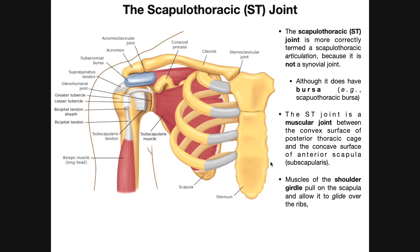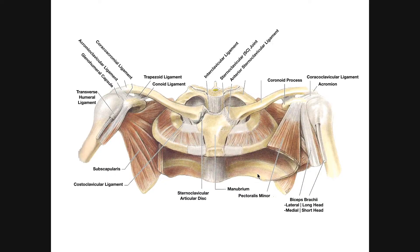Welcome back to Anatomy and Physiology on Catalyst University. In this video, we're going to be discussing the scapulothoracic or ST joint. Before we do that, we're going to do a brief review of some of the things we've seen in the previous two videos. We're going to look at a conglomerate of all the structures together and see how they fit in, and then we'll look at the scapulothoracic articulation.